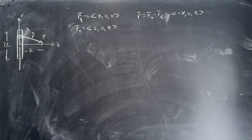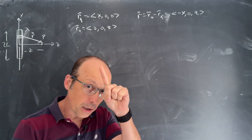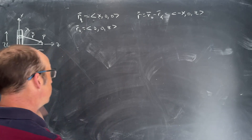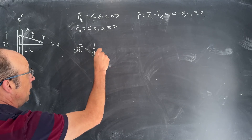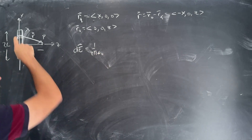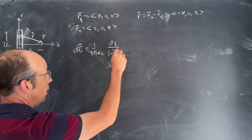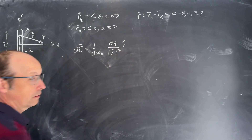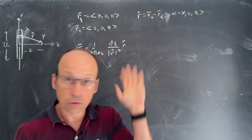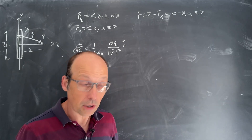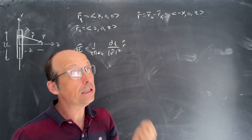Now we write an expression for the electric field due to that one little piece — a small dE. It is a vector: dE equals 1 over 4 pi epsilon naught, dq over r squared, r hat. You can't skip that — electric field is a vector. When we use the superposition principle, we need to add them up as vectors. Sometimes people say the x components will cancel, so they'll just do the z direction — that's not wrong, but this way is more complete.